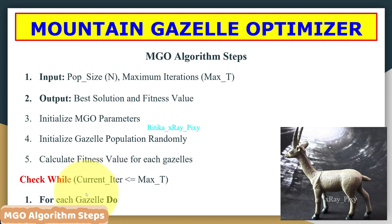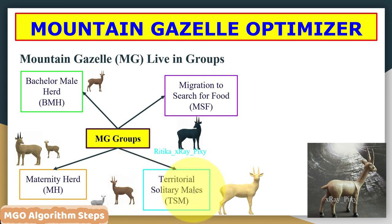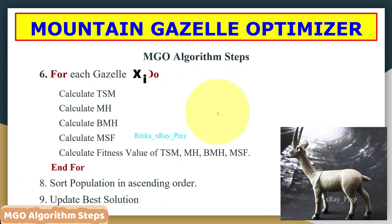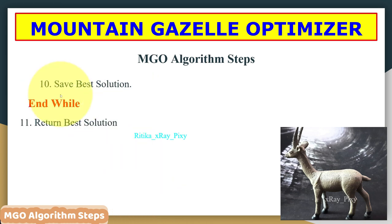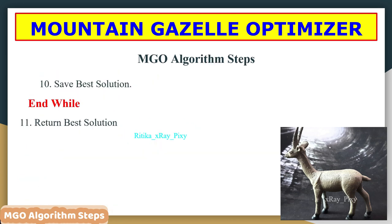We then start the main loop, checking whether the current iteration is less than or equal to the maximum iteration. For each gazelle, we calculate territorial solitary males, maternity herd, bachelor male herd, and migration to search for food. After that, we sort the population in ascending order, update and save the best solution, and repeat until the stopping condition is met, then display the best solution found.